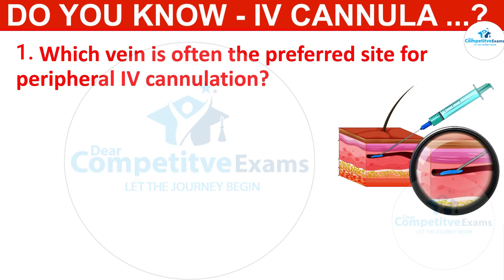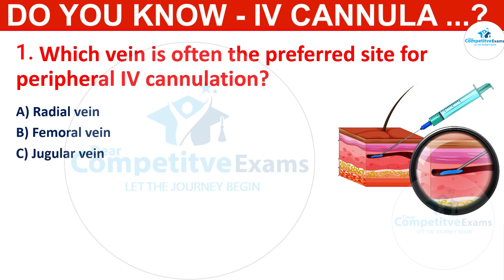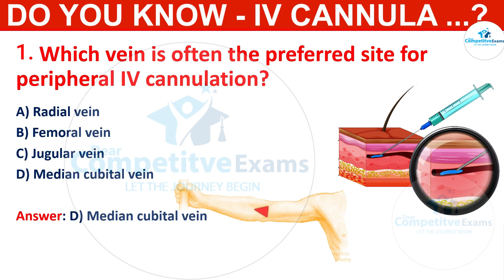Which vein is often the preferred site for peripheral IV cannulation? Options: radial vein, femoral vein, jugular vein, or median cubital vein. The correct answer is median cubital vein. The median cubital vein, located in the antecubital fossa, is commonly chosen for peripheral IV access.